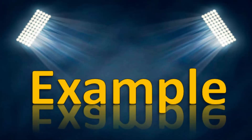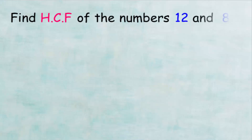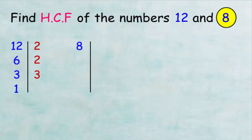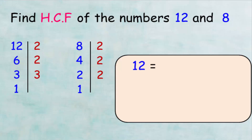Now, let's see an example to find the highest common factor. In this example, we want to find the HCF of the numbers 12 and 8. First, we will factorize the number 12 to find its prime factors. We will divide 12 by 2 to get 6, then 6 divided by 2 gives 3, and 3 divided by 3 gives 1. So we can write the number 12 as the product of 2 times 2 times 3. And the number 8 as 2 times 2 times 2.